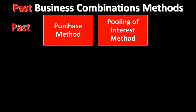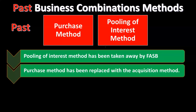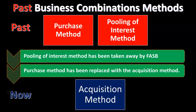In the past, we had combination methods that included the purchase method and the pooling of interest method. Then the pooling of interest method was taken away by FASB — FASB said they were no longer going to allow the pooling of interest method. Then the purchase method was replaced with the acquisition method. Pooling of interest has been removed, and the purchase method has basically been renamed and modified to the acquisition method.